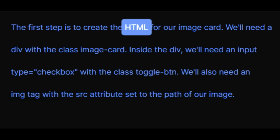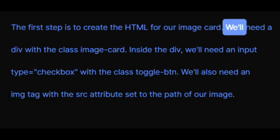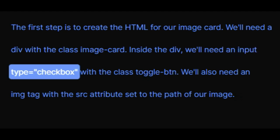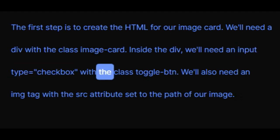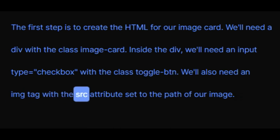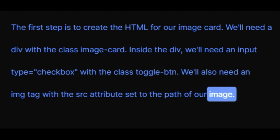The first step is to create the HTML for our image card. We'll need a div with the class image card. Inside the div, we'll need an input type equals checkbox with the class toggle btn. We'll also need an img tag with the src attribute set to the path of our image.